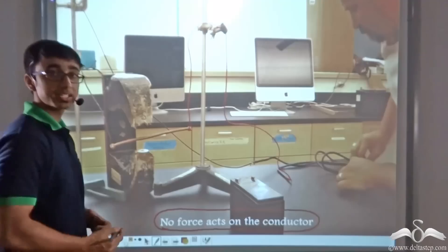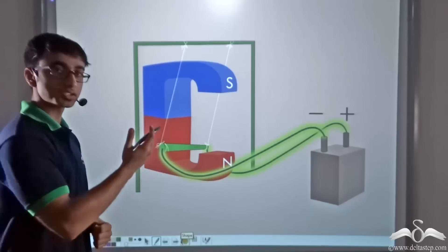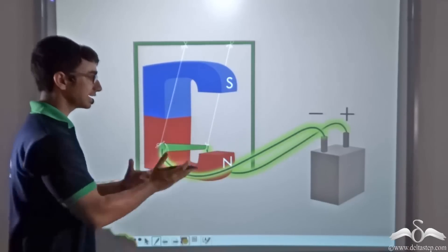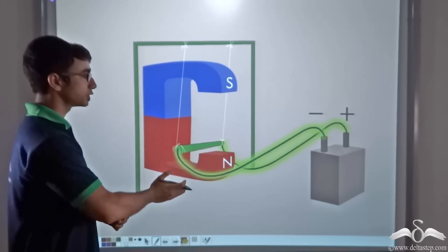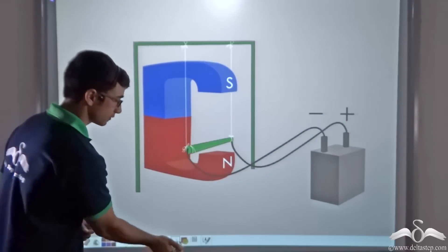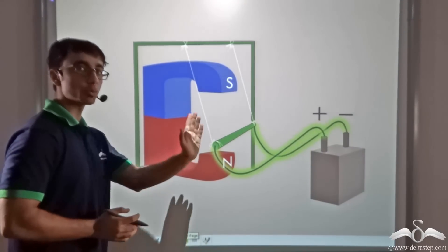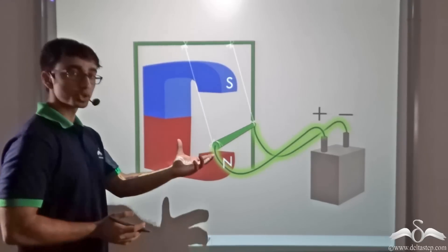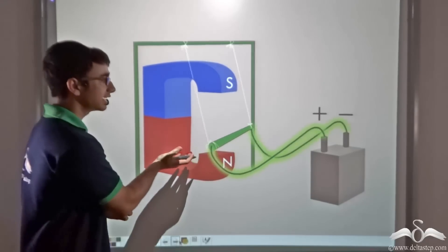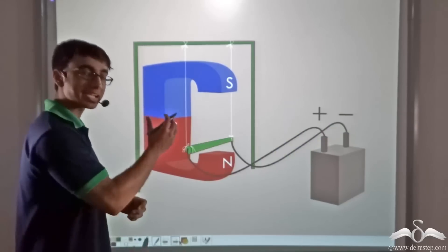There was no force initially because no current was flowing through the conductor. When current starts flowing, as indicated by the highlighted wires, a force acts on the conductor causing it to deflect to the left hand side. A similar thing happens if we reverse the direction of current, but in the opposite direction. So initially the force took the conductor inwards into the magnet; now with reversed current the force brings it outside the magnet.